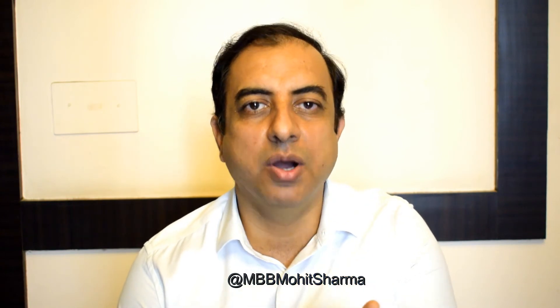The third element is the goal statement. There is a slight difference between a problem statement and a goal statement. Goal statement should be SMART — Specific, Measurable, Attainable, Relevant, and Time-bound. The key difference is that the goal statement is time-bound.